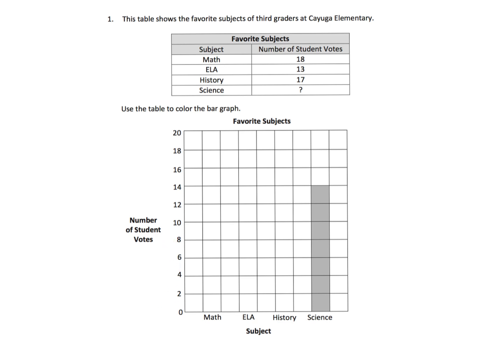We want to notice what our units are. In this case, each box represents two — so two, four, six, eight, and so on. If we have 18 students who like math, we find the math bar and count up: two, four, six, eight, ten, twelve, fourteen, sixteen, eighteen. That's what it looks like. Now let's shade it in.